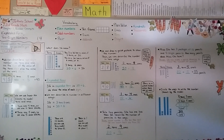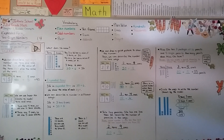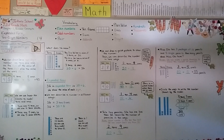Remember, we can write a two-digit number in expanded form by showing the value of each digit and putting a plus sign between them. Our next lesson, 1.5, will talk about different ways to write numbers. I hope I'll see you there — hope you're having a great day, and I'll see you next time. Bye!